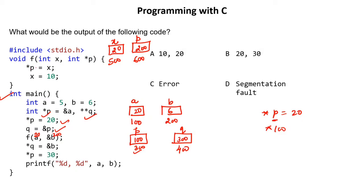Inside the function, we do *P = X. P contains 200, so pointer P means we go to address 200, which is variable B in main. We move inside and change the value of B to the current value of X, which is 20. So B's value is updated to 20.